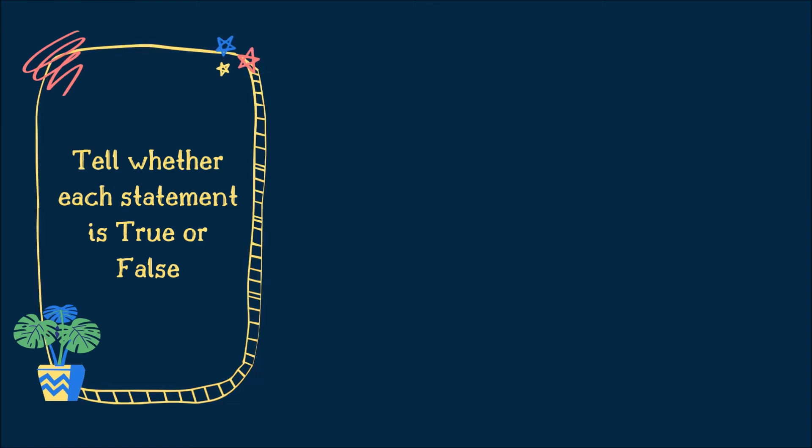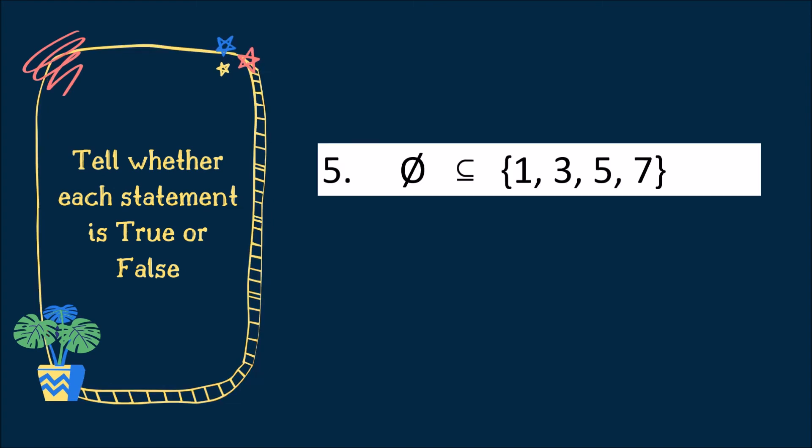Last number. Empty set or null set is a subset of 1, 3, 5, and 7. Is it true or false? Keep on thinking! Very good! The correct answer is true.